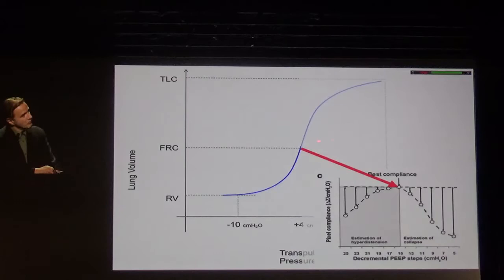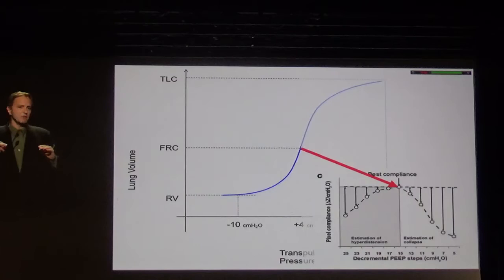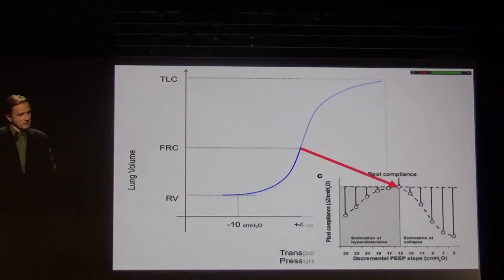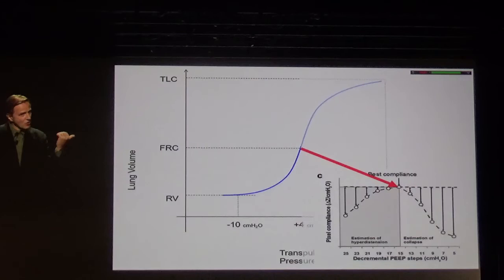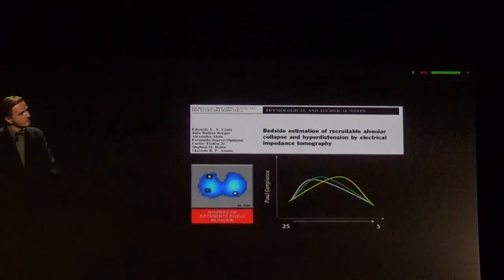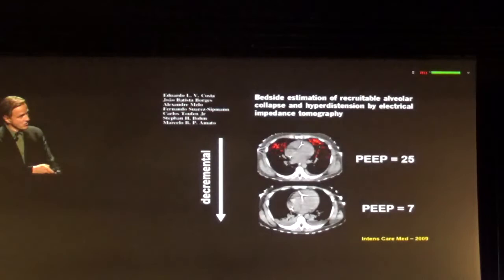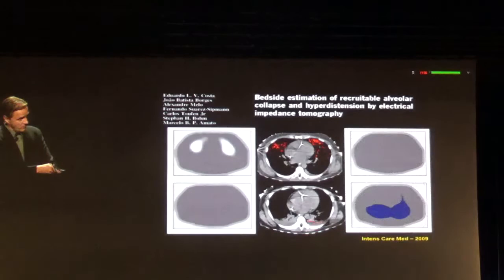This point of maximum compliance is typically when transpulmonary pressure is around 2 cmH₂O, meaning that lung region is at the optimum position of the PV curve. This was surprising to me — I learned a lot from Professor Lachman, who emphasized surface tension problems — but to my surprise, mechanical factors and transpulmonary pressure are a much more important factor for lung collapse than surface tension forces. Most patients have lung collapse because they are below FRC, with transpulmonary pressures below +2 cmH₂O, causing airway and complete lung collapse, as shown in CT or EIT studies.